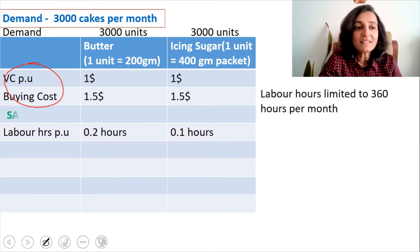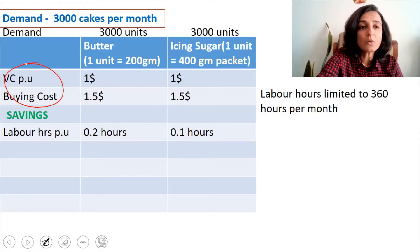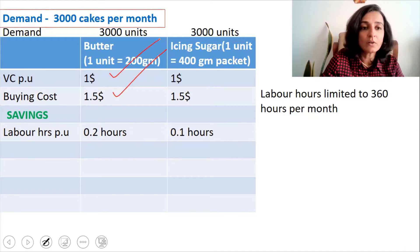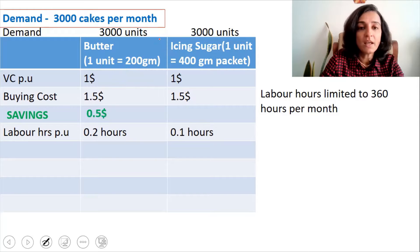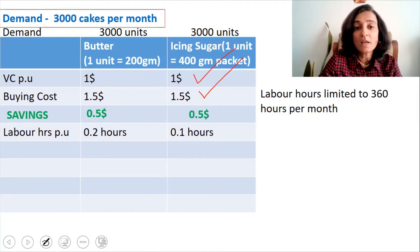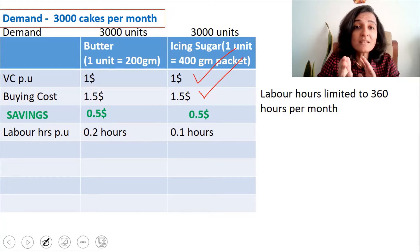Which means the savings per unit for butter is $1.5 minus $1, or $0.5 per unit. And for icing sugar, it is also $1.5 minus $1, which is $0.5 per unit.